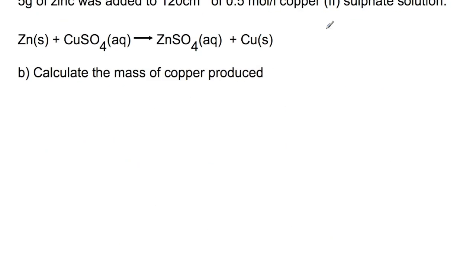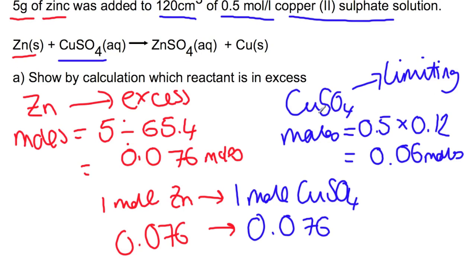If we go on to the second part of the question, I ask you to calculate the mass of copper produced. So if we go back to our first part of the calculation, because copper sulfate is the limiting reagent, this is the number of moles that we're going to look at to work out how many moles of copper are produced. So we've got 0.06 moles.